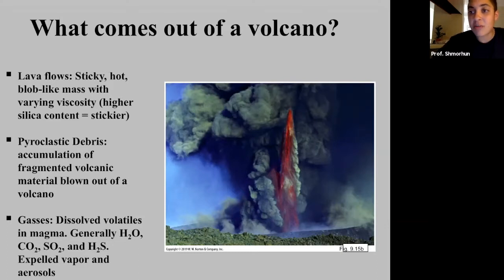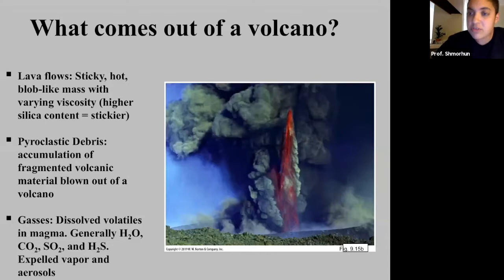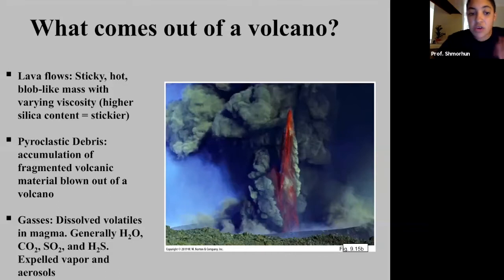Remember I talked about what comprises a melt. You obviously have the liquid stuff, you have volatiles — which are the dissolved gases that get trapped within the magma chamber, the melt itself — and then you also have some solid pieces of rock.